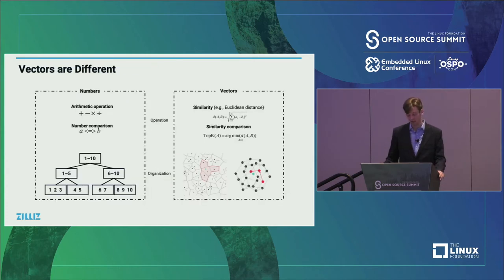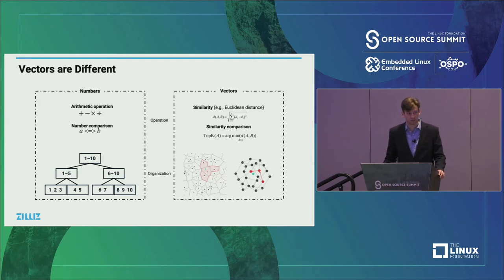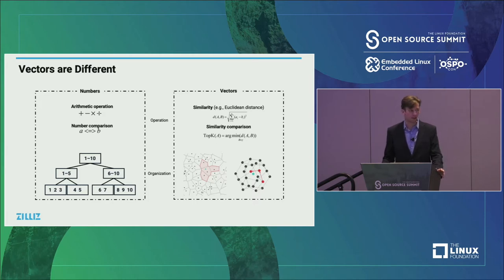Numbers have basic arithmetic operations — addition, subtraction, multiplication, and division. They're easily comparable with three states: greater than, less than, or equal to, which results in easy indexing methods like B-trees. Vectors, on the other hand, don't really have these simple arithmetic operations. The main operations used with vectors are similarity calculations — two of the main ones are Euclidean distance (L2 norm) and cosine distance (L1 norm). These calculations can be difficult, and you don't really have a direct way of comparing vectors. That's where approximate nearest neighbor comes into play, with approaches like clustering and graph-based methods.